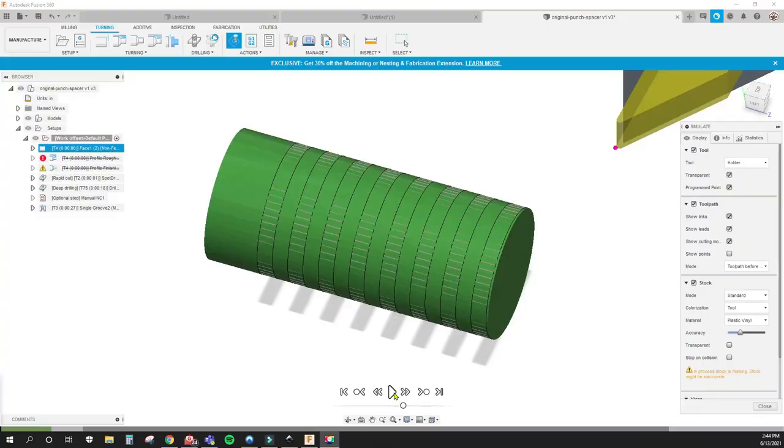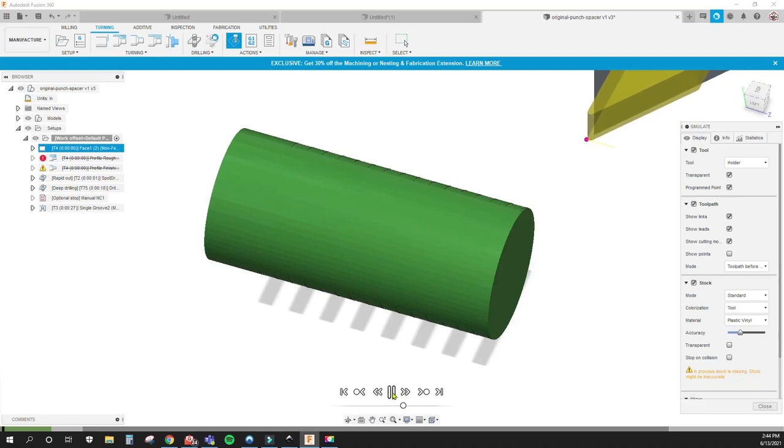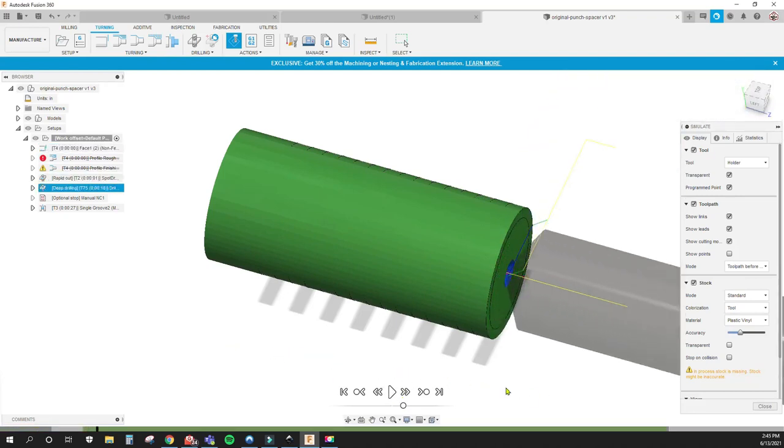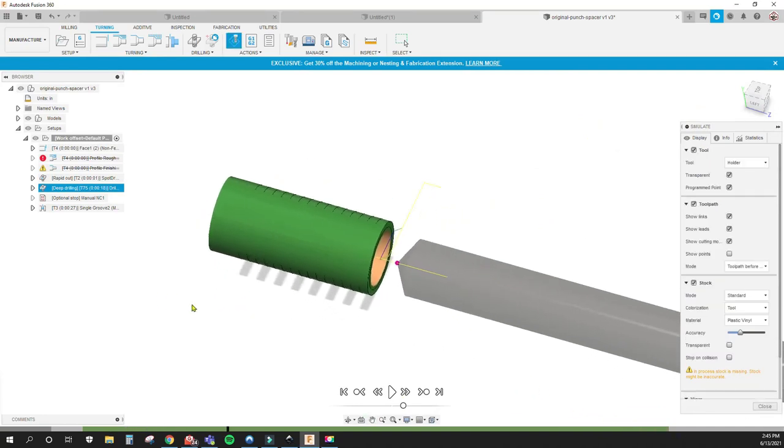Here we are in Fusion where I faced this off. Five-eighths is the actual outside diameter of the spacer, so all I had to do was face it off, spot drill, drill all the way through, and then come in with my parting tool and part a bunch off.